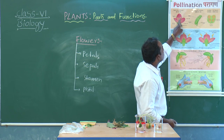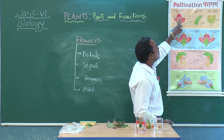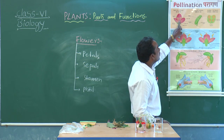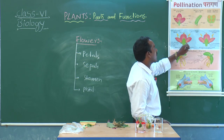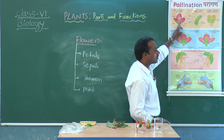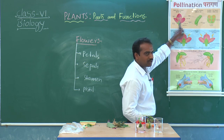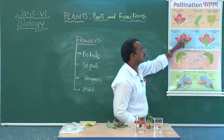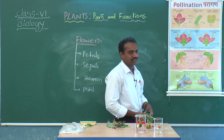Pistil, or carpel, is the female reproductive part of the flower. We will discuss about this in next classes in detail.